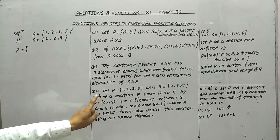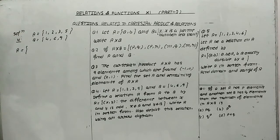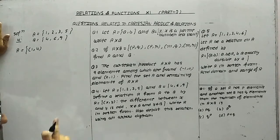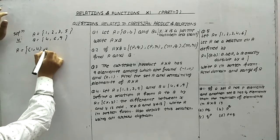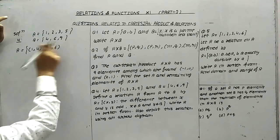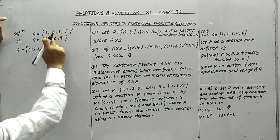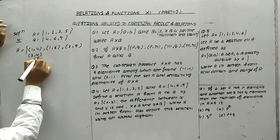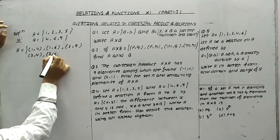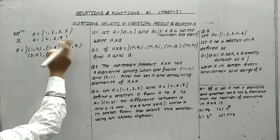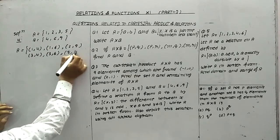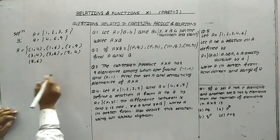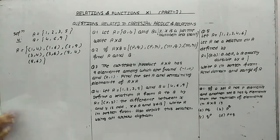R is a relation from A to B, so the first element comes from A. 1 minus 4 is odd — included. 1 and 6 is odd — included. 1 and 9 is not odd. 2 and 4 is not odd. 2 and 6 is not odd. 2 and 9 — included. 3 and 4 gives odd — included. 3 and 6 gives odd — included. 3 and 9 gives even — excluded. 5 and 4 gives odd — included. 5 and 6 gives odd — included. 5 and 9 gives even — excluded. So R = {(1,4),(1,6),(2,9),(3,4),(3,6),(5,4),(5,6)}.